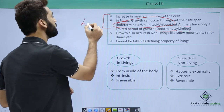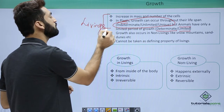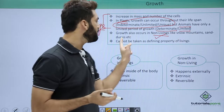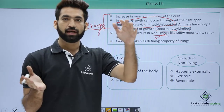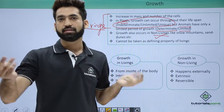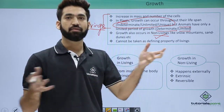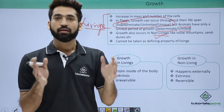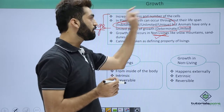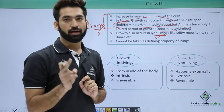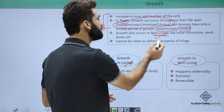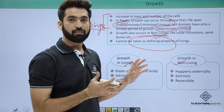Now, growth is not only found in living organisms. Growth is also present in non-living things. You must have seen a snow mountain growing — it was a certain size, but due to the deposition of outside material like ice, the mountain size has grown. So that is also growth. Because growth is also present in non-living things, it should not be considered a defining property of living organisms.